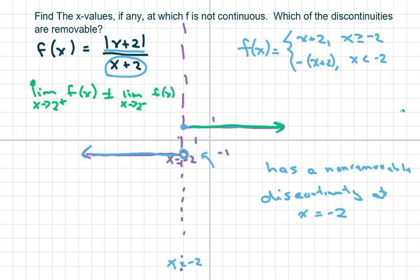Because the limit as x approaches negative 2 from the right equals 1, and from the left side it equals negative 1. So you have the 1 and negative 1.